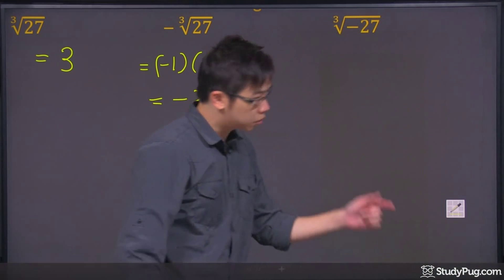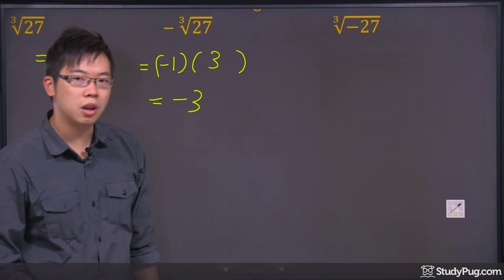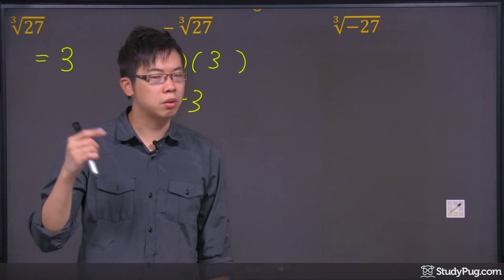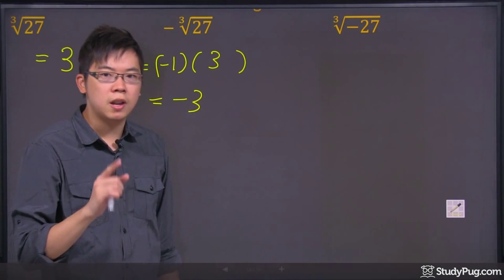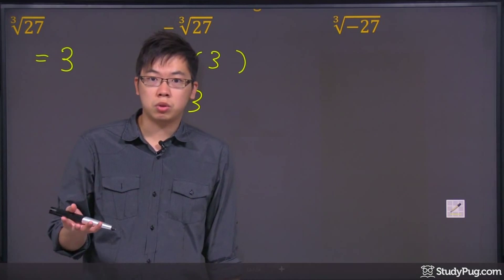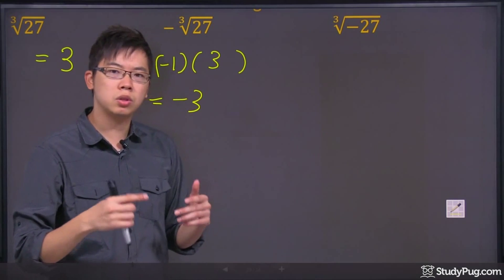Coming down to the very last question right here, it's a cube root of negative 27. Now if you remember, we don't square root any negative numbers because it will give it no solution, right? But this time you're not doing square root, you're doing cube root.